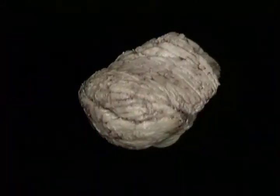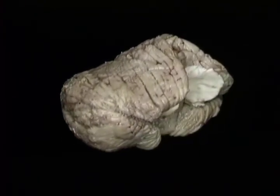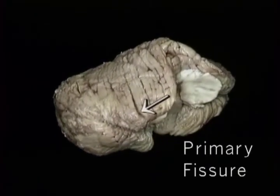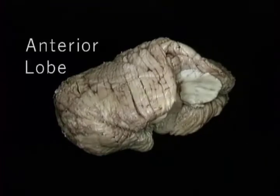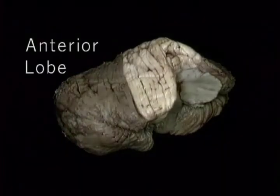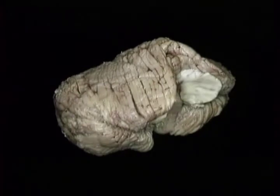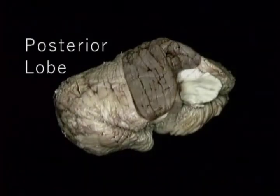The surface of the cerebellum is marked by many parallel fissures, some deeper than others. This deep primary fissure divides the cerebellum into a small anterior lobe and a large posterior lobe.